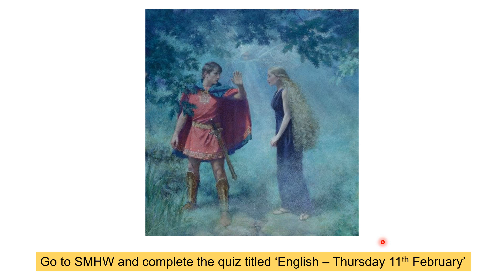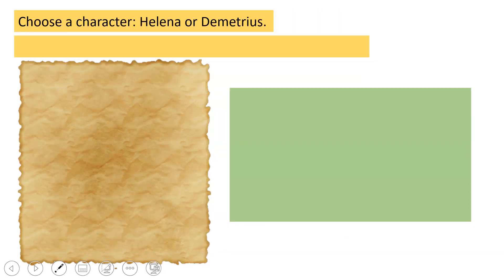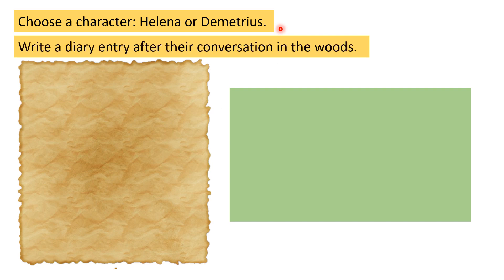Okay, if you're back, that means that you've completed the quiz — I look forward to seeing your scores. Now is your final task. I would like you to choose a character based on what we have just read: Helena, who is desperate to be Demetrius's dog and be treated by him in any way, or Demetrius, who is very frustrated by Helena. Once you have chosen your character, you're going to write a diary entry after their conversation in the woods. You might want to start it like this: 'Dear diary, you will never guess what happened today.' You need to think about what's just happened in the woods and imagine that you are writing as your character — either Helena or Demetrius.